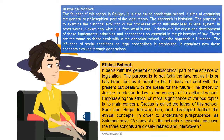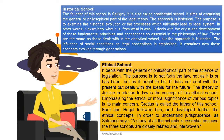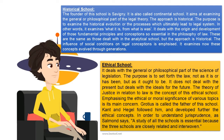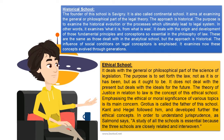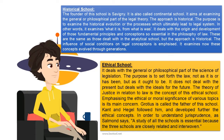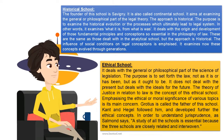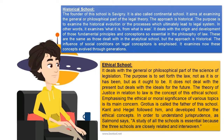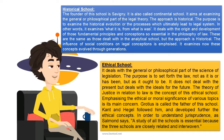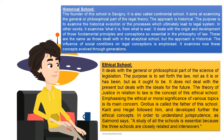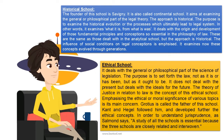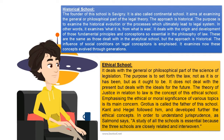The ethical school deals with the general or philosophical part of the science of legislation. Its purpose is to set forth the law not as it is or has been, but as it ought to be. It does not deal with the present but deals with ideas for the future. The theory of justice in relation to law is the central concept of this school, emphasizing the ethical or moral significance of various topics. Grotius is called the father of this school; Kant and Hegel followed him and further developed the ethical concepts.